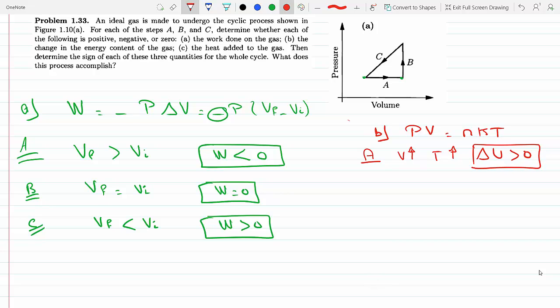Okay, so, for process B, it's true that the volume stays the same. However, the pressure increases, and if the pressure increases from the ideal gas law, the temperature increases. And, again, since the change in internal energy is proportional to the temperature, also here, delta U will be positive.